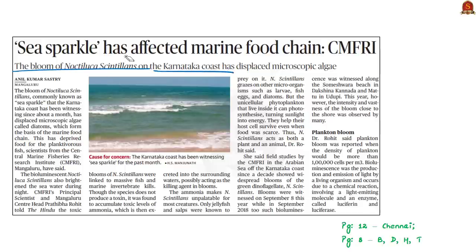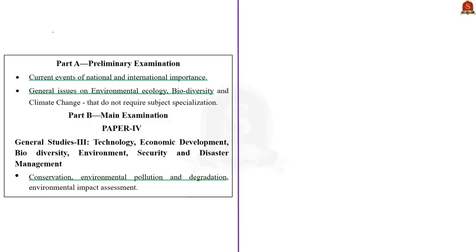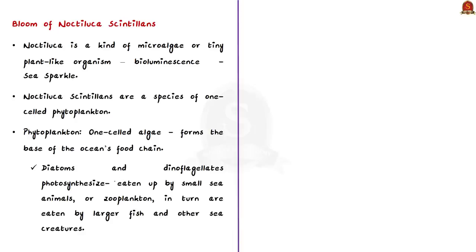Noctiluca scintillans are commonly known as sea sparkle. Noctiluca is a kind of microalgae or a tiny plant-like organism. These Noctiluca algae emit light when they are disturbed, and this bioluminescence is what is called the sea sparkle mentioned in the news article.